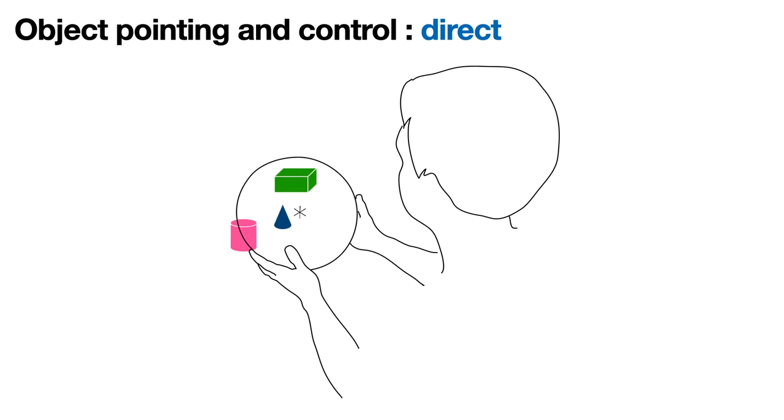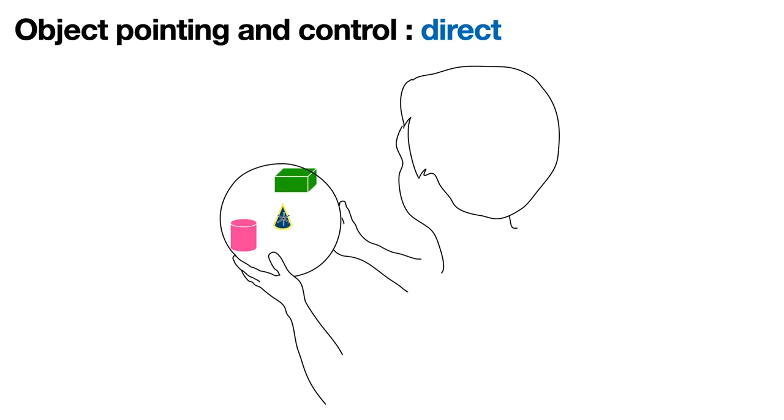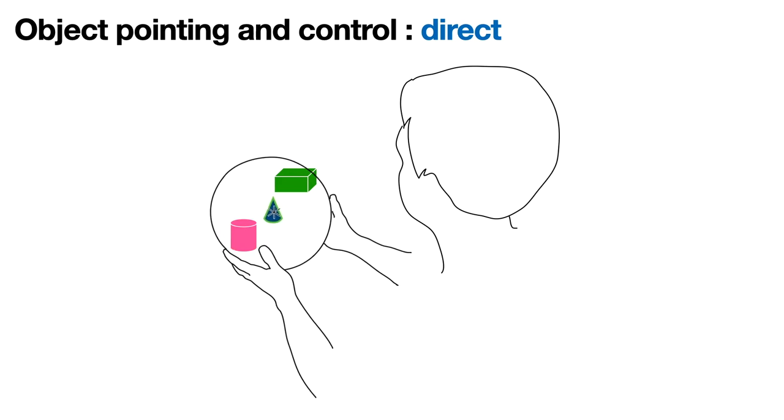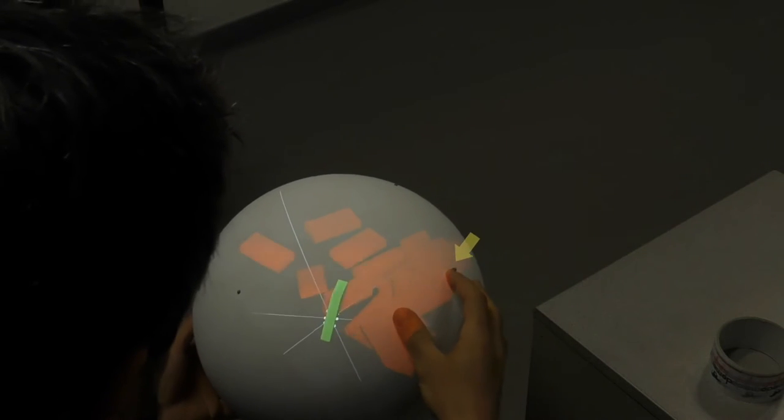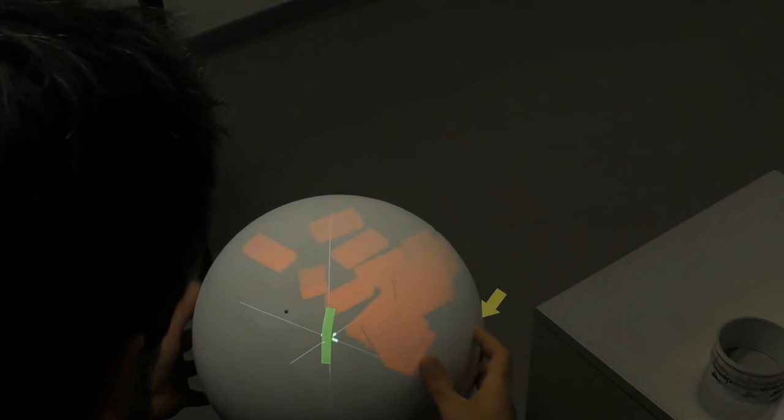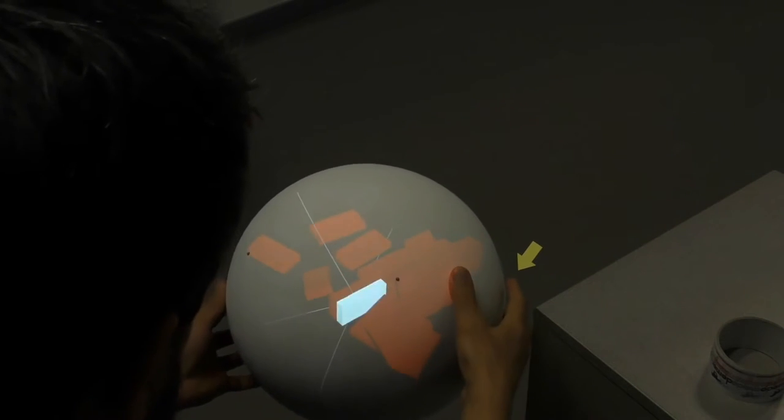In direct pointing, users move the pointer inside the object. They validate their selection by tapping with the index finger. The object is then rigidly attached to the display and can be transformed with 6 degrees of freedom. This is what this looks like on the actual system. The index finger can be seen touching and releasing contact with the display.